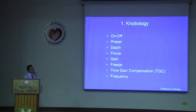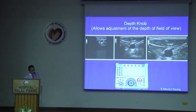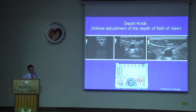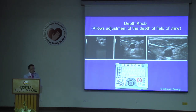First, you need to know knobology — how to optimize imaging. The first key knob you need to use is the depth knob, because each nerve is different in depth. An ideal and optimal depth setting is very important because you need to identify the nerve and other important tissues, and you also have to see the needle approach very clearly.